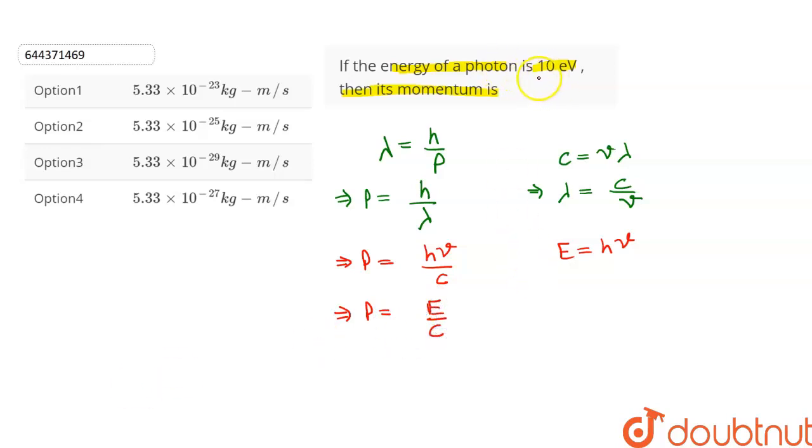It is given that the energy is 10 electron volts. So E is equal to 10 into 1.6 into 10 raised to the power minus 19 joules. And we know that C is equal to 3 into 10 raised to the power 8 meters per second.